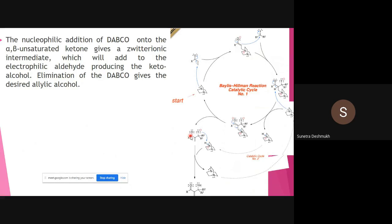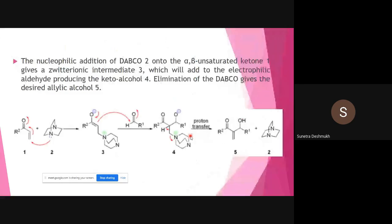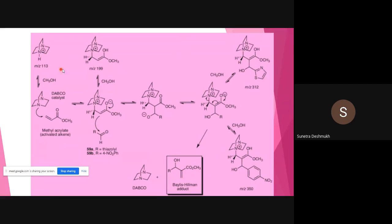One more mechanism is explained here. We finally get the Baylis-Hillman allylic alcohol. The reaction starts from the DABCO catalyst and alpha-beta unsaturated methyl acrylate. Addition gives the zwitterionic intermediate, then the nucleophile attacks across the carbonyl group. After rearrangement and elimination of DABCO, the Baylis-Hillman adduct is afforded and DABCO is regenerated as the catalyst.